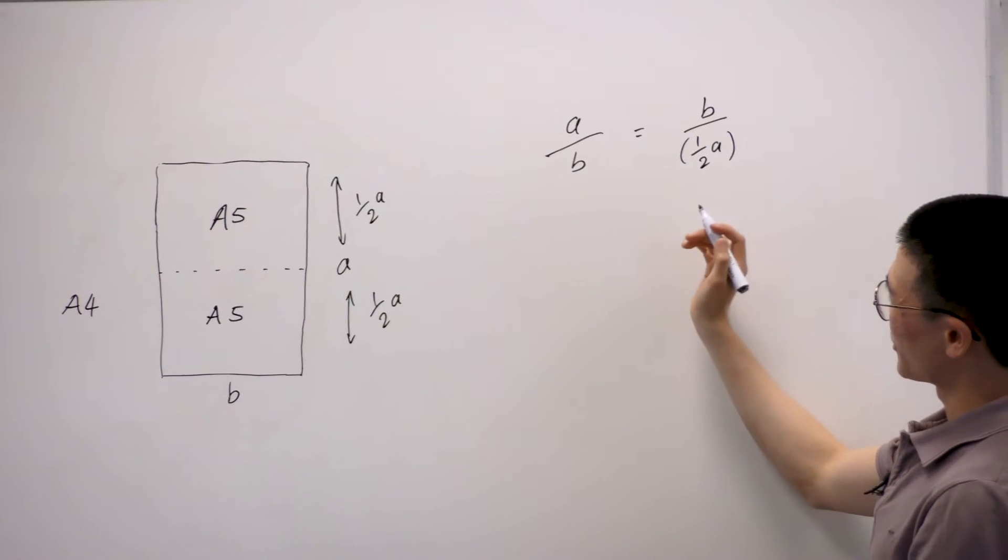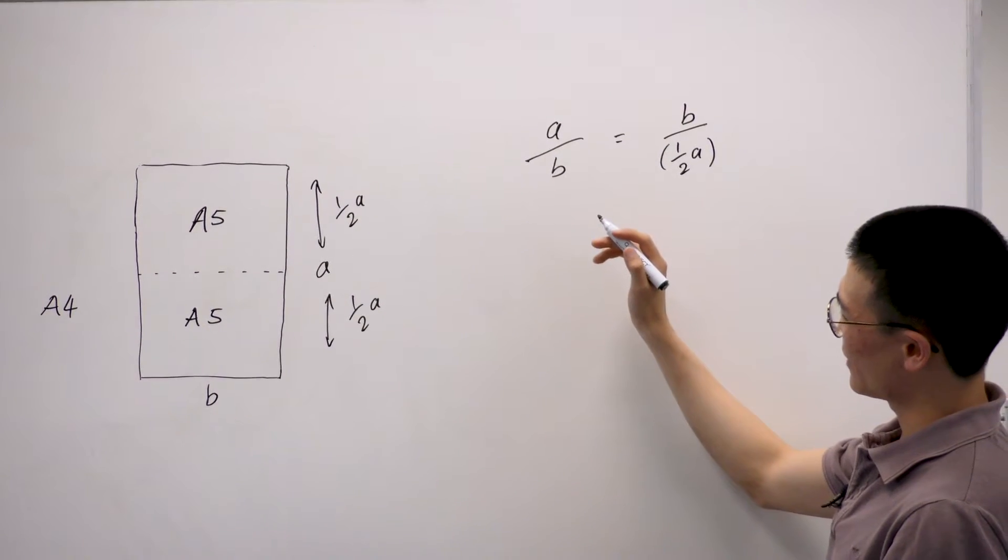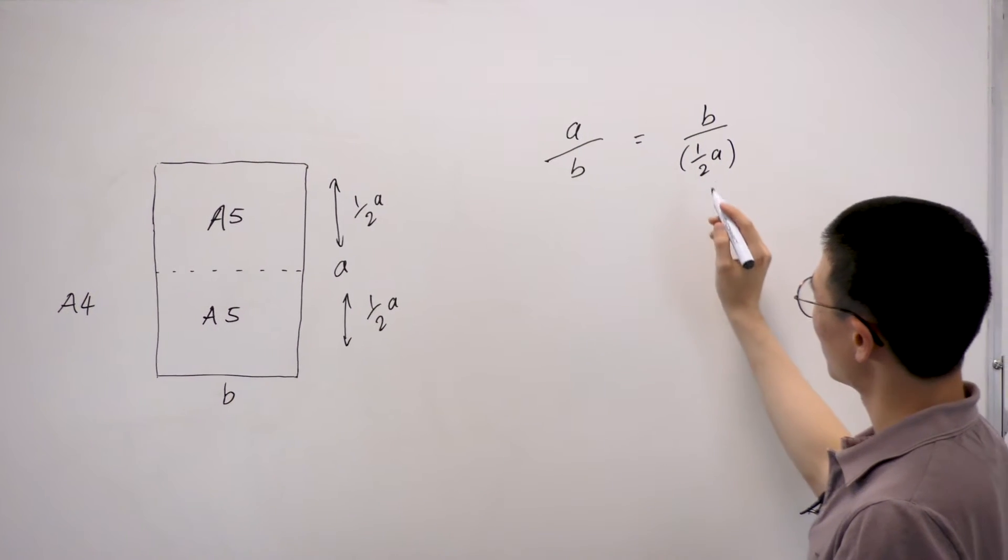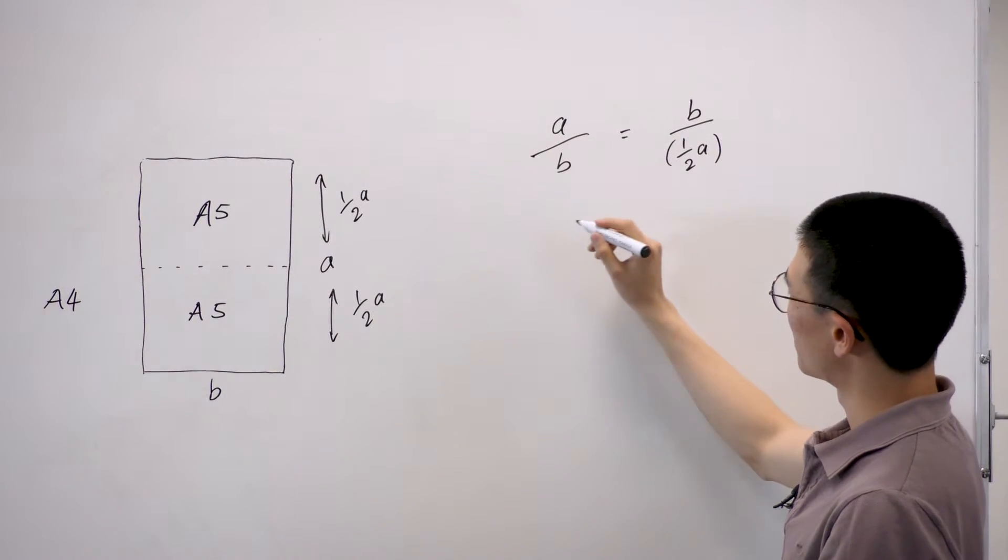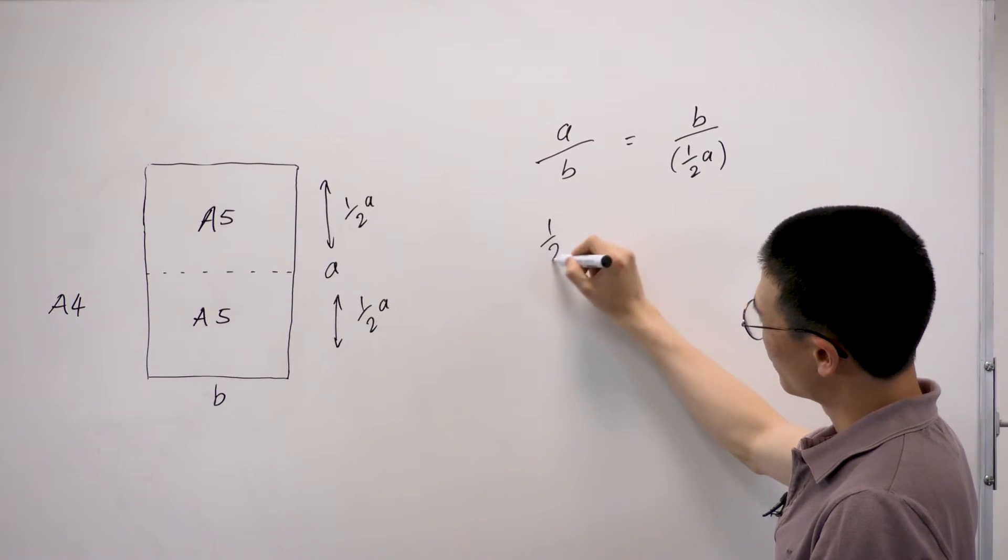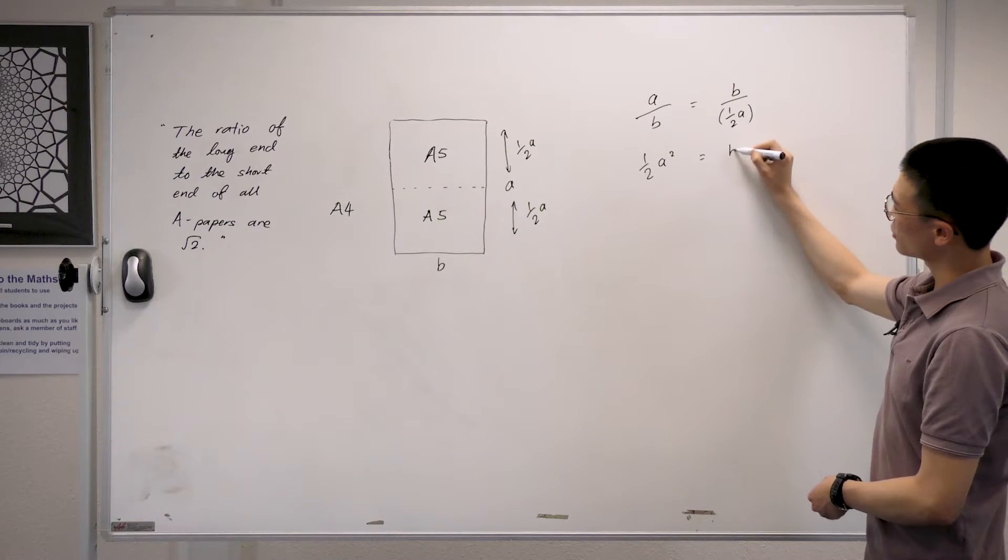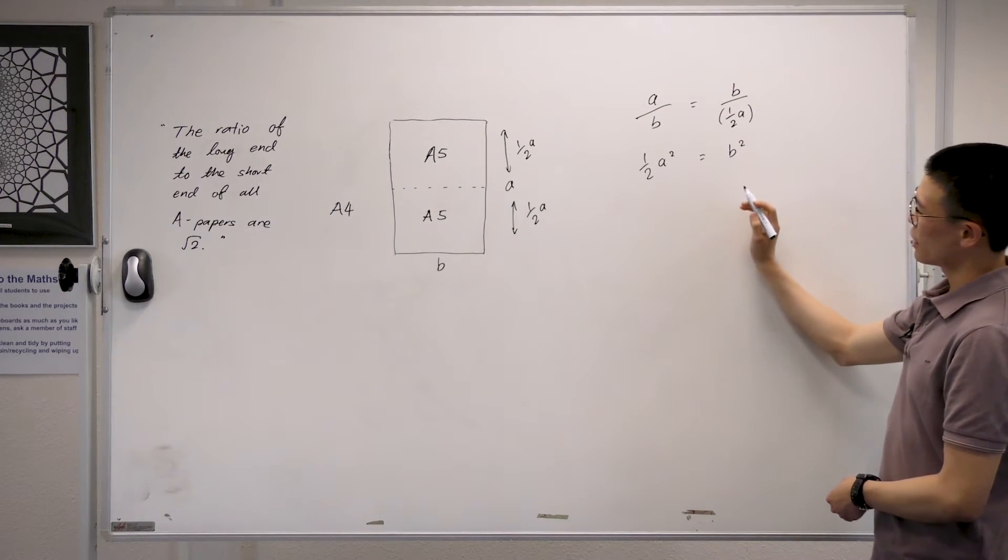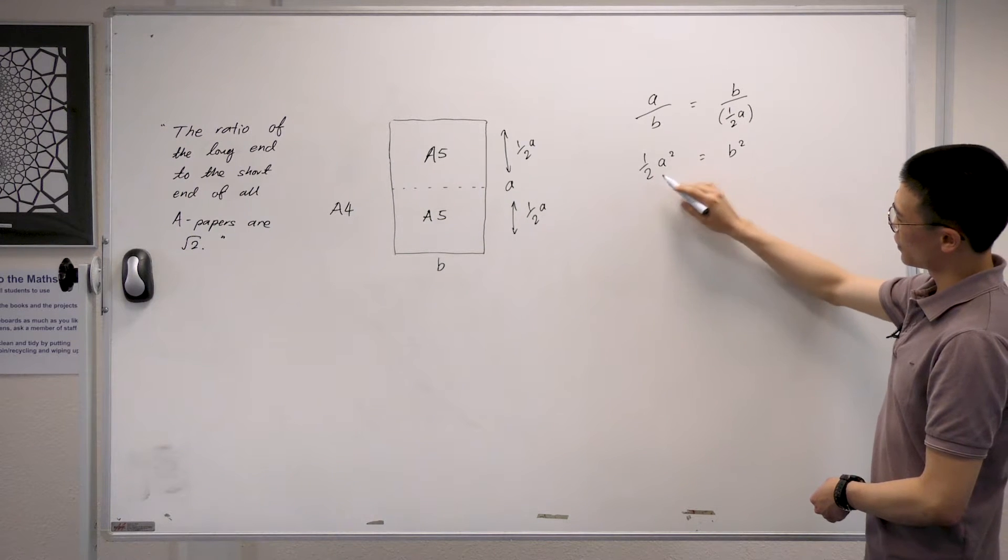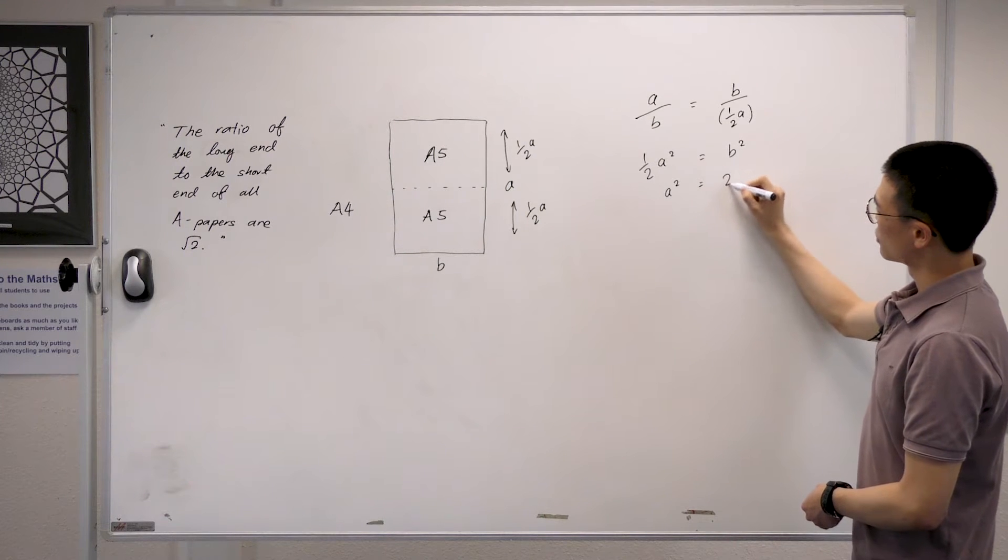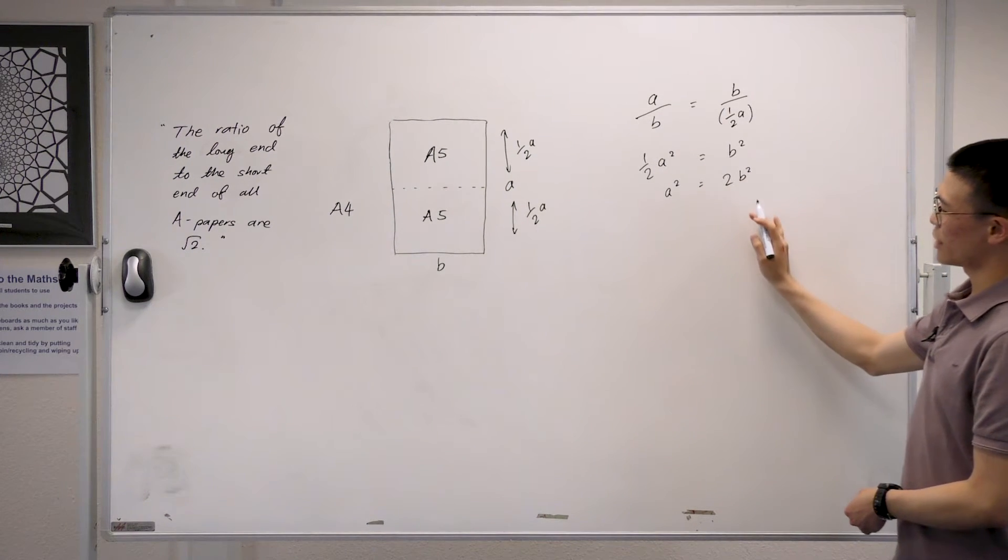So now that we have this equation out here, we know that we can move all of the A's to one end and all of the B's to the other end. So moving all the A's to this bit, we have half of A squared equals to B squared. And now we move this fraction out of the way, trying to make it a little bit nicer. We have A squared equals 2B squared on this end.